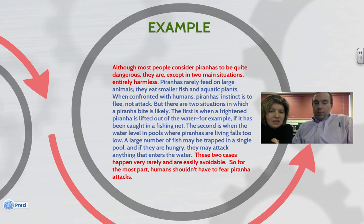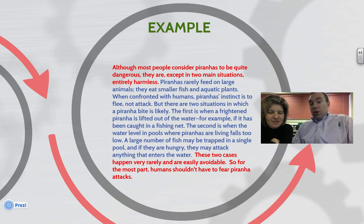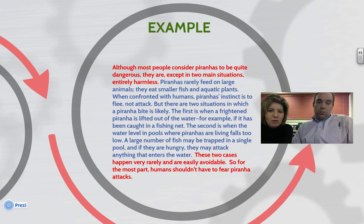But there are two situations in which a piranha bite is likely. The first is when a frightened piranha is lifted out of the water — for example, if it has been caught in a fisher's net. The second is when the water level in the pool where the piranhas are living falls too low; a large number of fish may be trapped in a single pool, and if they are hungry they may attack anything that enters the water. These two cases happen very rarely and are easily avoidable, so for the most part humans shouldn't have to fear piranha attacks. You can see the closing sentence ties right back to the main idea, and all the information in blue provides the analysis and support needed to support that topic sentence.